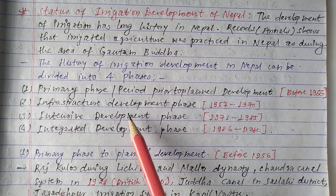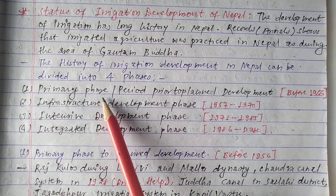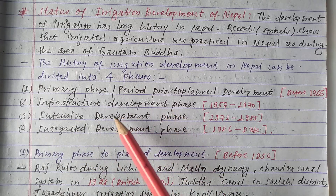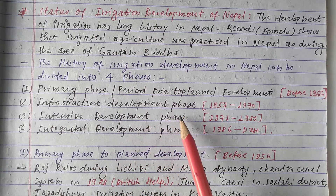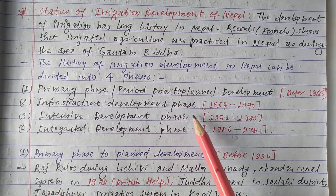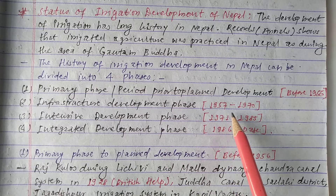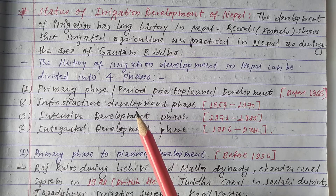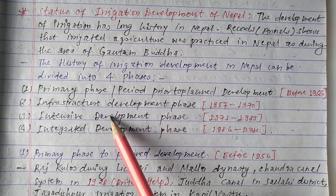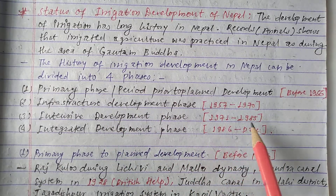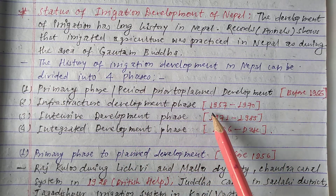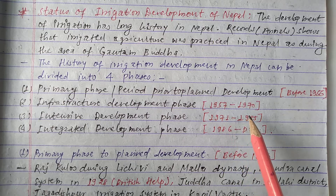The second phase is the Infrastructure Development Phase. After the Primary Phase, infrastructure development began, which is why this phase is called Infrastructure Development. The time period of this phase ranges from 1957 to 1970.